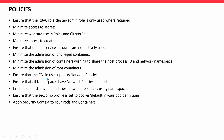Ensure that the CNI in use supports network policies. Calico is a well-known plugin that is also tested by Kubernetes and supports network policies. Ensure that all namespaces have network policies defined. Create administrative boundaries between resources using namespaces. Ensure that the seccomp profile is set to Docker default in your pod definitions. Apply security context to your pods and containers.